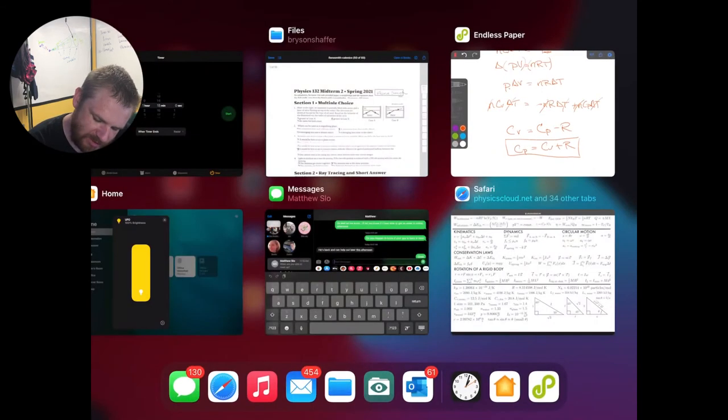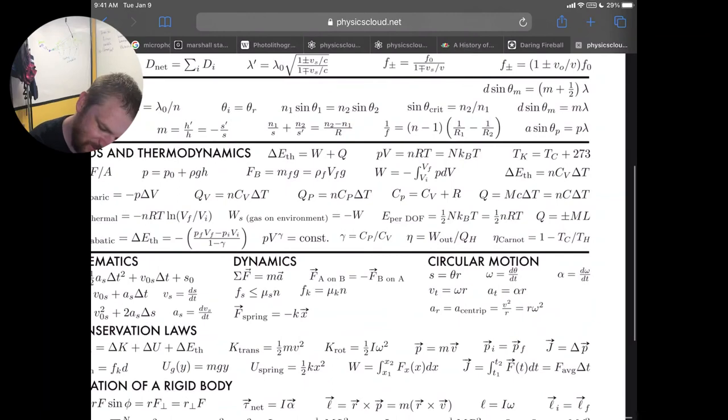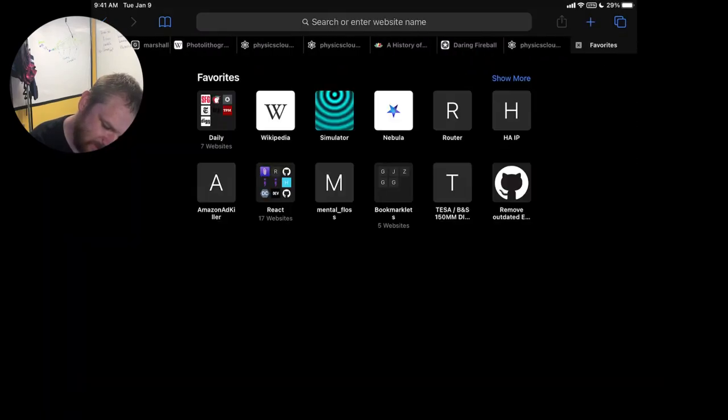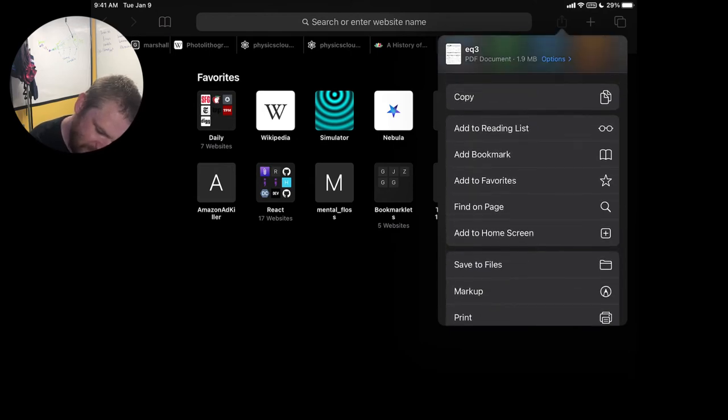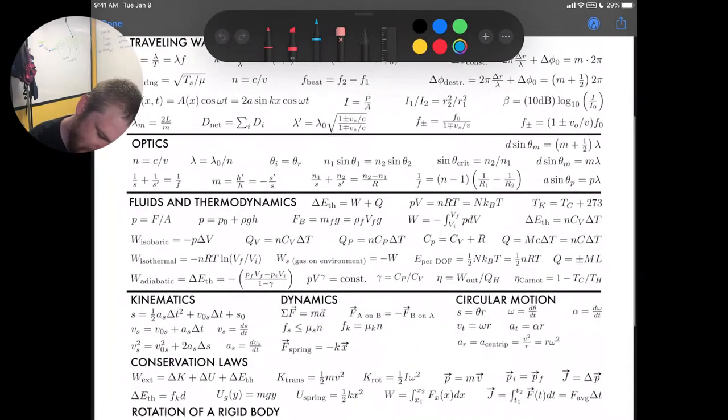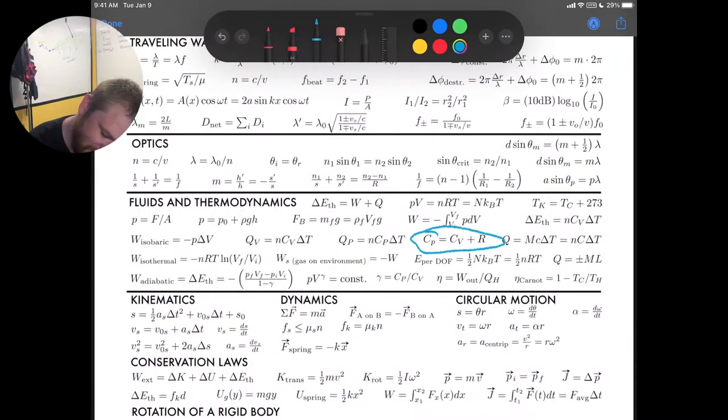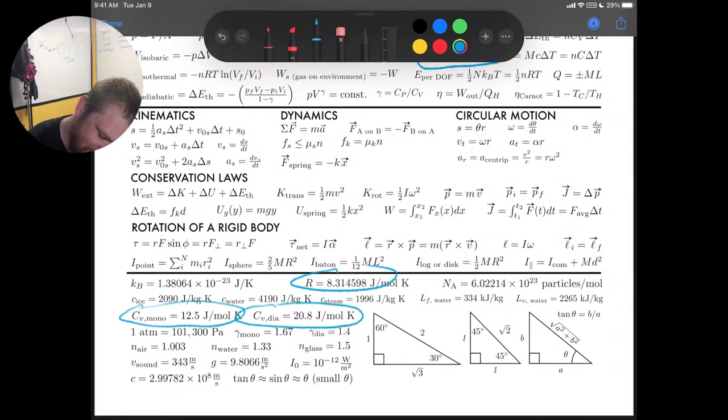All right. So if we take a look at our equation sheet, in our thermodynamics section, we have this relationship CP is equal to CV plus R. So we have CP is equal to CV plus R. And down here at the bottom in the constant section, we have R.